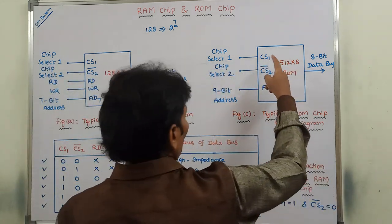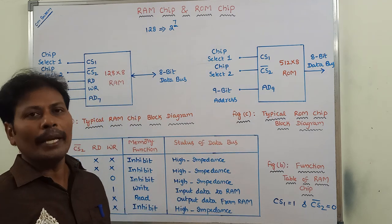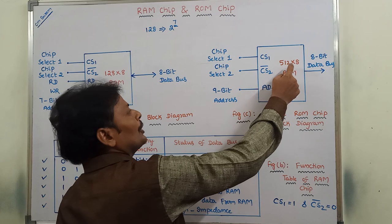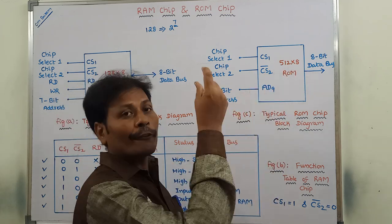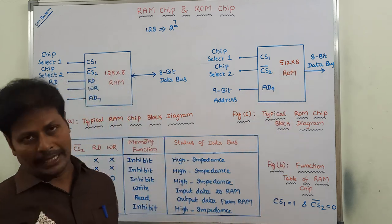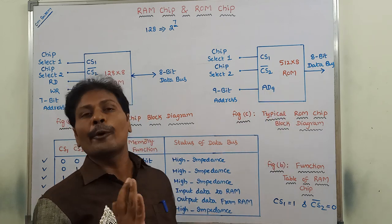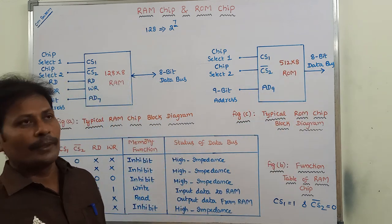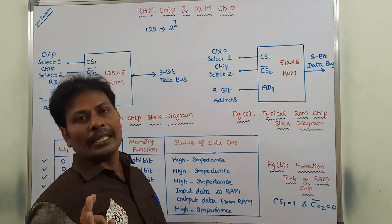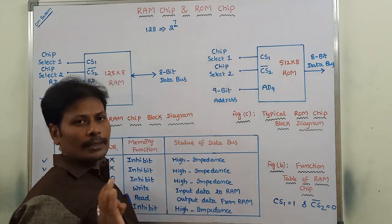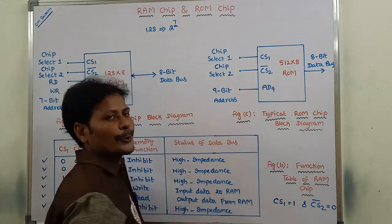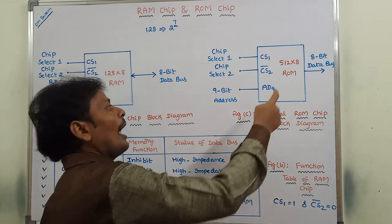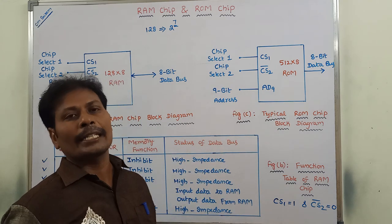Figure C shows the block diagram of a ROM chip. The capacity of the ROM chip is 512 into 8, meaning it consists of 512 words and each word contains 8 bits. ROM stands for read-only memory. This ROM chip contains only 3 inputs. The first two are chip select control inputs: CS1 and CS2 bar. These chip select control inputs are used for enabling the ROM chip when it is selected by the CPU.